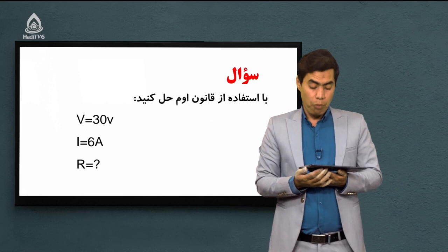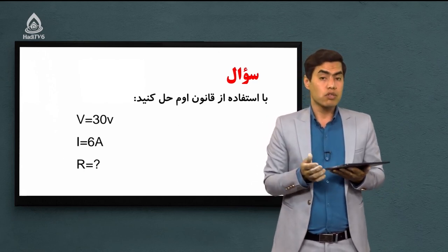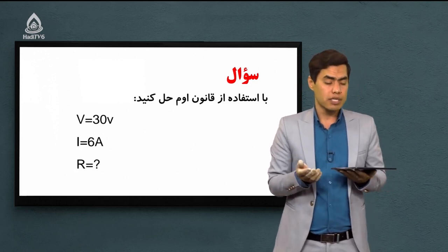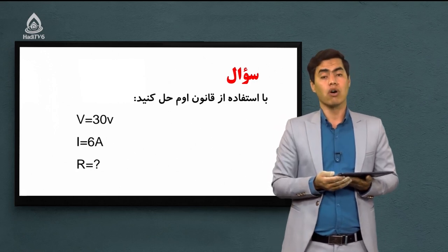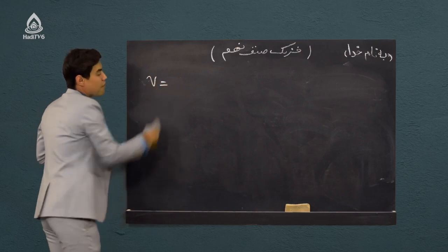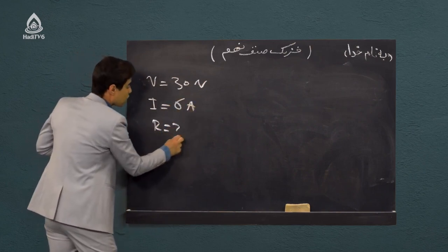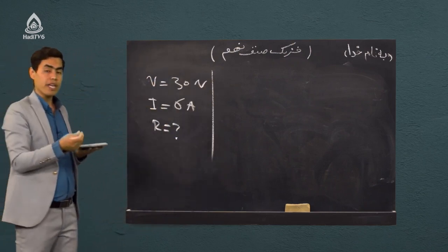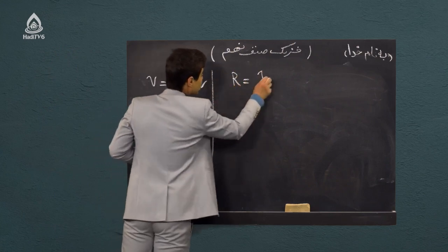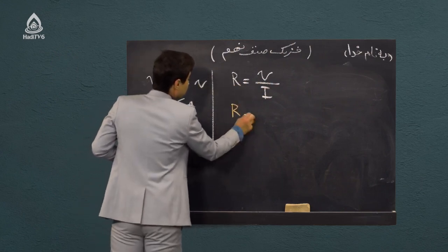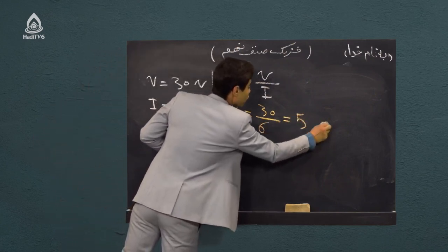سوال بعدی با استفاده از قانون اوم حل کنید: V = 30 ولت، I = 6 امپیر، R از ما خواسته. هیچ توضیح اضافه‌ای نداده، فقط داده‌ها داده شده. باز هم فرمول می‌نویسیم: R = V/I. R = 30/6 = 5. واحدش هم که اوم می‌شه. سوال بسیار بسیار ساده‌ای بود.